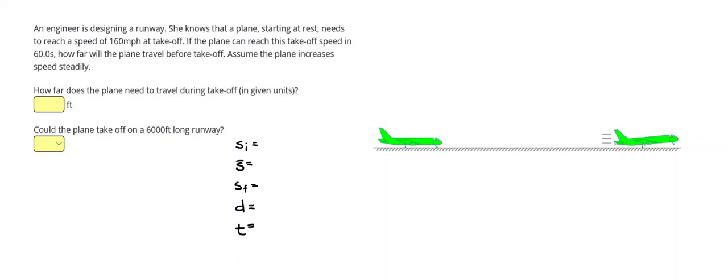An engineer is designing a runway. She knows that a plane starting at rest needs to reach a speed of 160 miles per hour at takeoff. If the plane can reach this takeoff speed in 60.0 seconds, how far will the plane travel before takeoff? Assume the plane increases speed steadily.